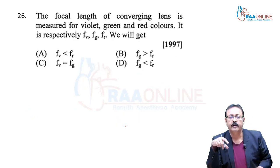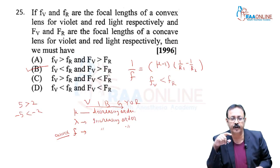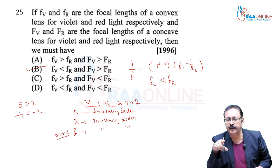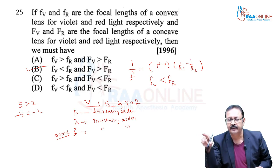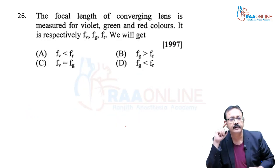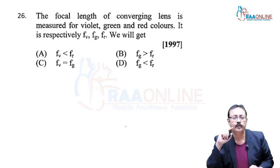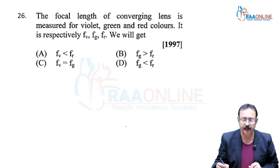Now which colors do we have? Violet, green, and red — moving from violet to green to red. It is increasing order of focal length. For red it is maximum. So we will go with option A, 26A.